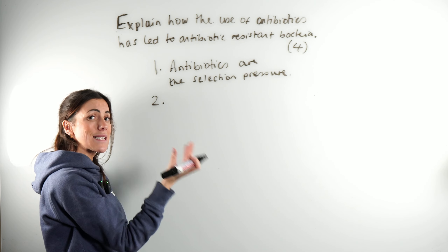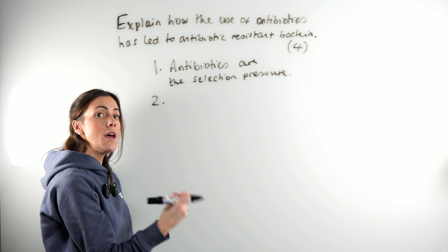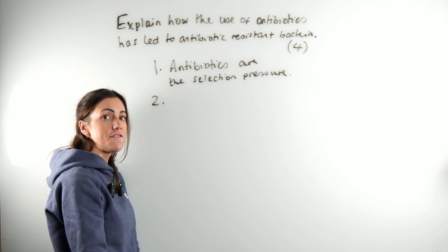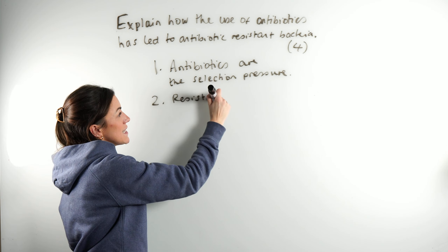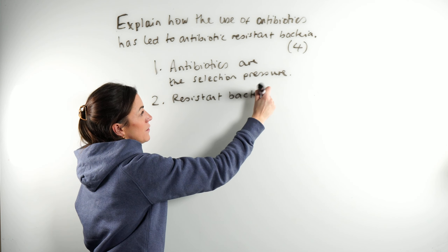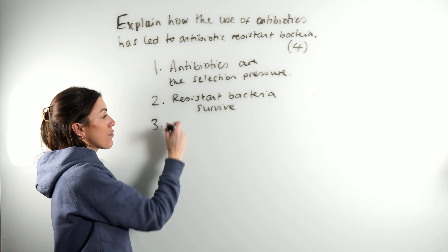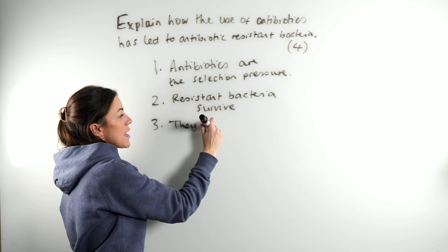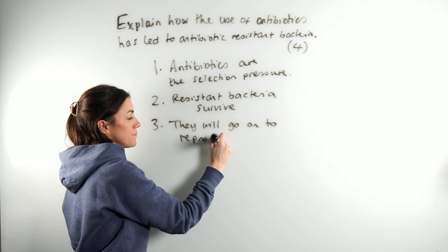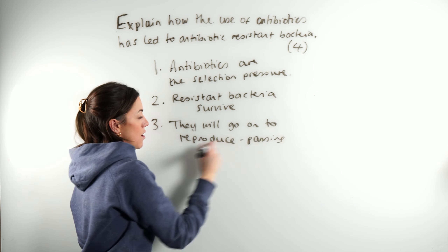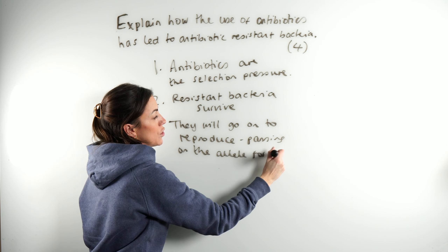The bacteria that are resistant to the antibiotic in the environment are going to be at an advantage — they're going to be able to survive. That's marking point two: resistant bacteria survive. And marking point three: they will go on to reproduce, passing on the allele for resistance.